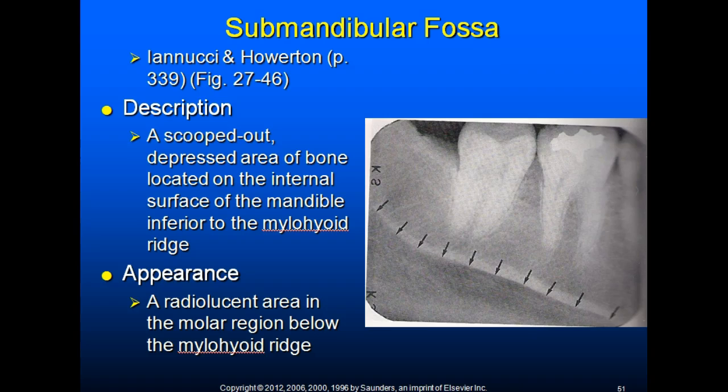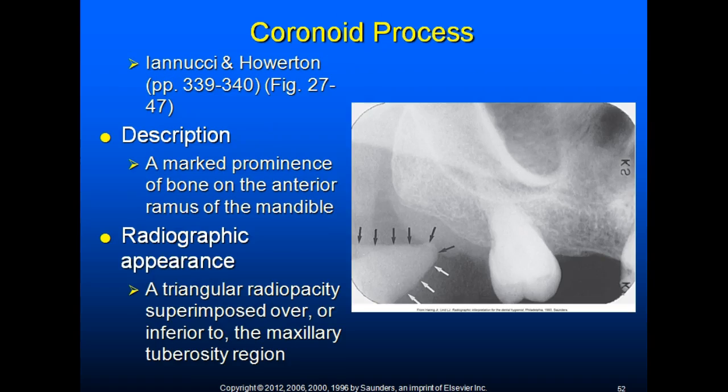The submandibular fossa is a scooped-out, depressed area of bone on the internal surface of the mandible, inferior to the mylohyoid ridge. It appears radiolucent and is also known as the mandibular fossa or submaxillary fossa. The submandibular salivary gland is located in the submandibular fossa. The coronoid process is a marked prominence of bone on the anterior ramus of the mandible, appearing as a triangular radiopacity superimposed over or inferior to the maxillary tuberosity region, and serves as an attachment site for one of the muscles of mastication.